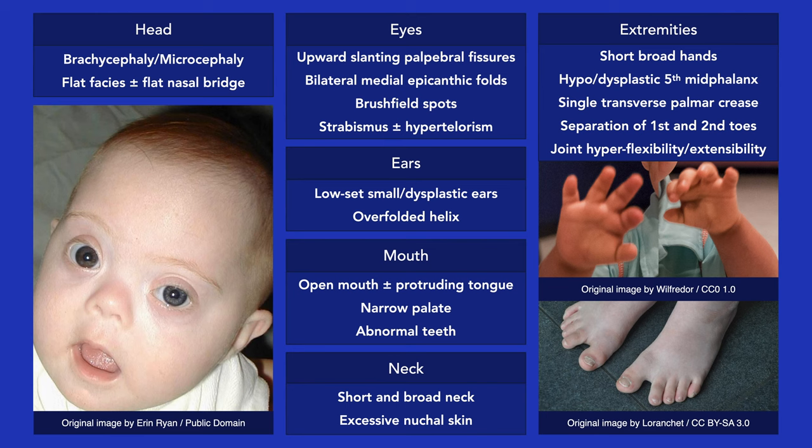Another varied characteristic finding is the presence of a single transverse palmar crease. This is not a pathognomonic finding, however, as it can occur in other conditions and in asymptomatic individuals as well.